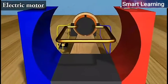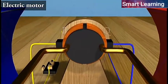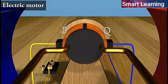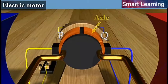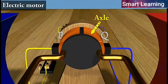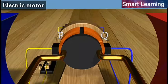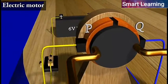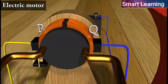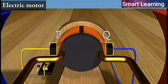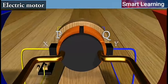The ends of the coil are connected to the two halves P and Q of a split ring. The inner sides of these halves are insulated and attached to an axle. The external conducting edges of P and Q touch two conducting stationary brushes X and Y respectively.